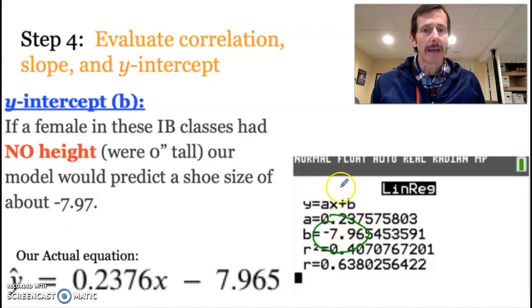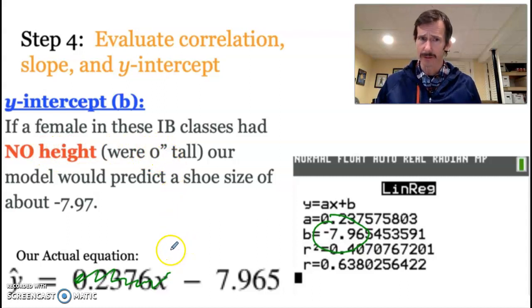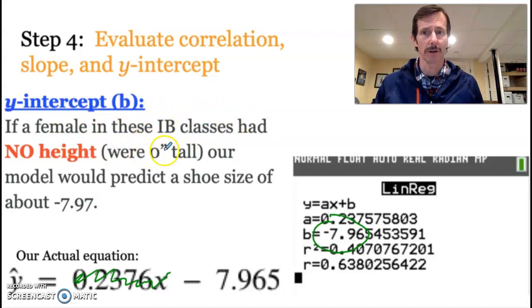And the y-intercept in any equation, any function really, is when x equals 0. That's always what the y-intercept is. So for us, in this situation, a y-intercept would be when this was a 0. And if this is a 0, that would be gone. And 0 in this case is indicating someone that has no height or is 0 inches tall. So if I have to do this, I just do it. If a female in these IB classes had no height, a.k.a. they were 0 inches tall, our model would predict a shoe size for that individual of negative 7.965.